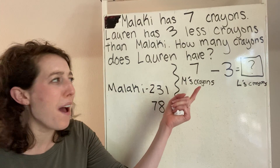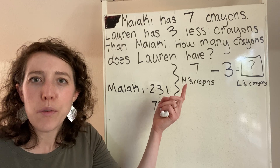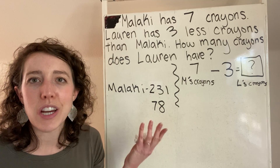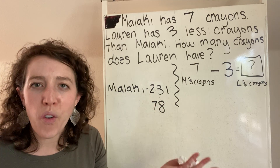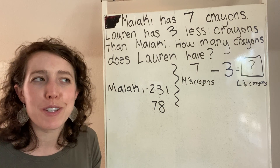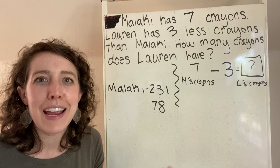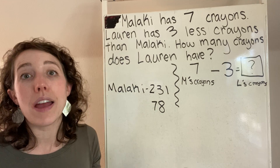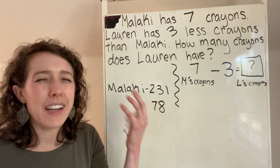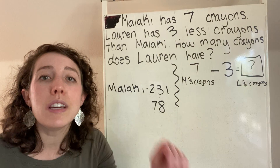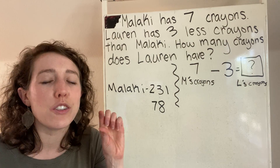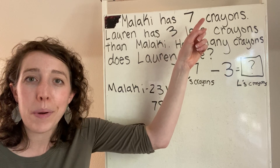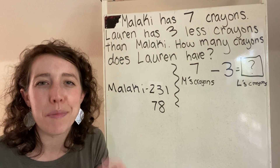Could you guys use mental math to figure this out with these numbers? How many crayons does Lauren have? She has four crayons. When I made my number smaller, did it make this story so much easier to visualize? If you ever come across a problem and you think this is so confusing, I'm having a hard time picturing it — if you give it smaller numbers, it makes it so much easier to figure out. You just have to make sure that you always put your bigger number in the same spot and your smaller number in the same spot.